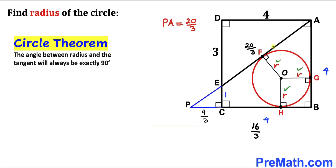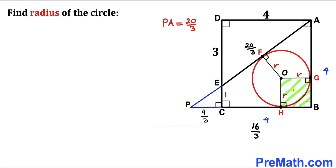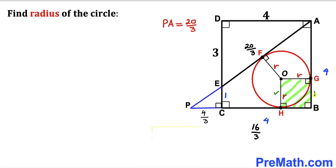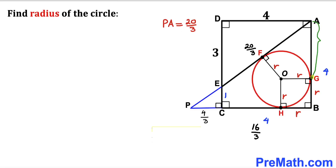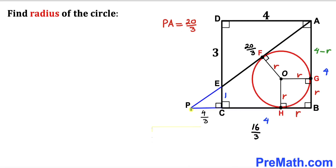Let's focus on square HBGO. Since each side equals r, all four sides are r. We know the whole side AB is 4 and the portion BG is r, so segment AG equals 4 minus r. Similarly, since the portion of side PB equal to r, segment PH equals 16/3 minus r.